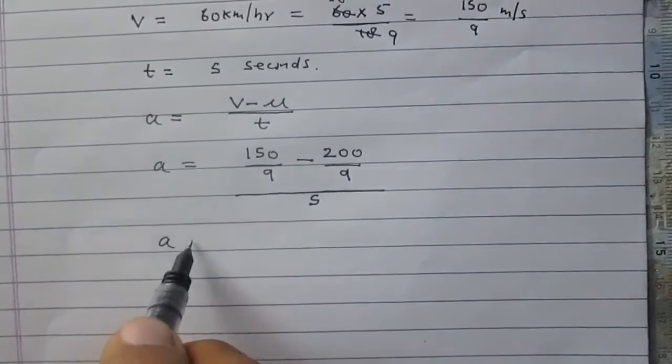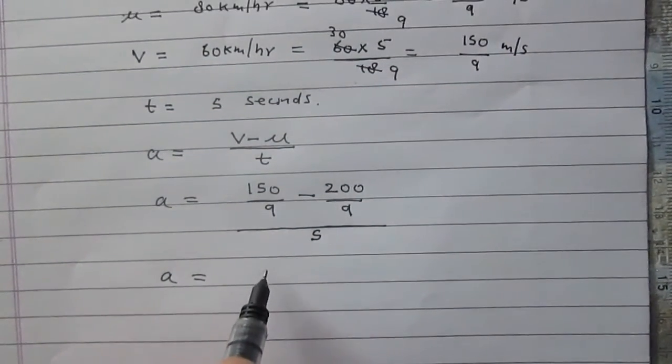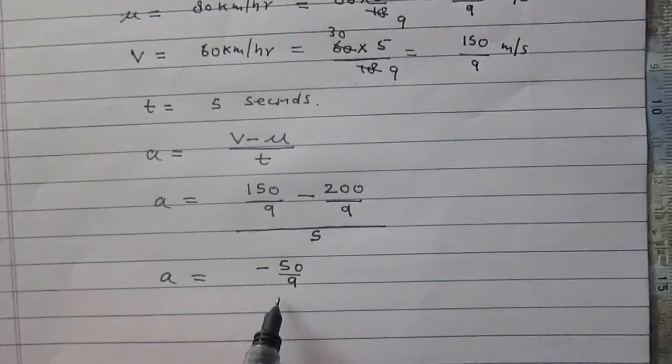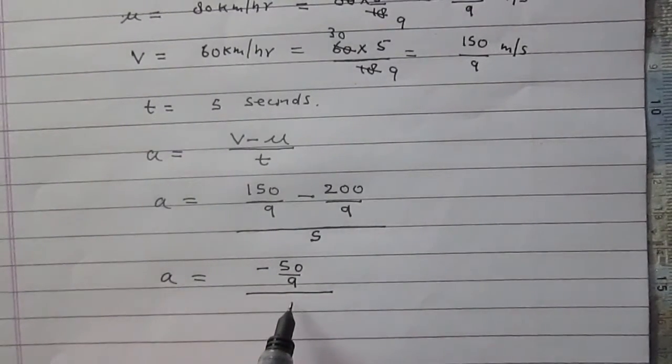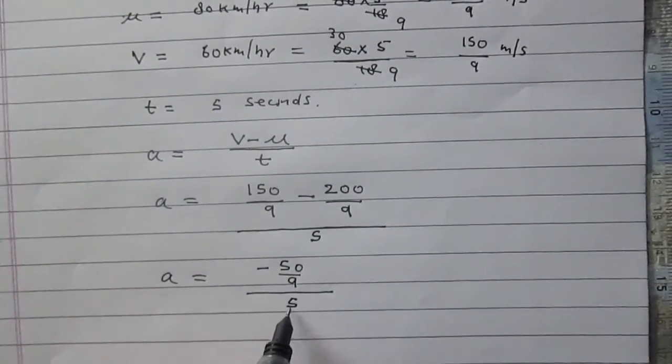On simplifying further, we will get minus 50 upon 9 in the numerator and in the denominator it is 5, which is 5 upon 1.